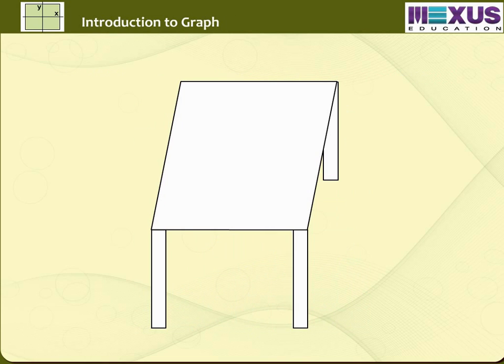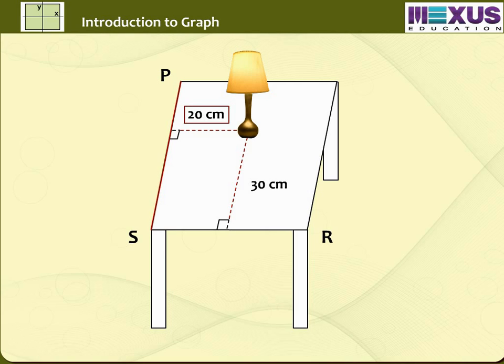How will you describe the position of a lamp on your study table to another person? Consider that the lamp is placed on the table. Choose two adjacent edges SR and PS, then draw perpendiculars on the edges SR and PS from the position of the lamp and measure the lengths of these perpendiculars. Let the length of these perpendiculars be 30 cm and 20 cm respectively. Now, the position of the lamp from the left edge PS is 20 cm and from the lower edge SR is 30 cm.